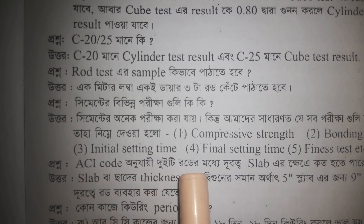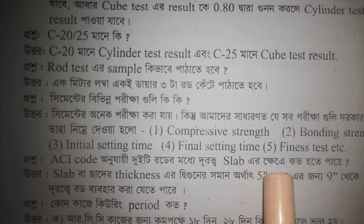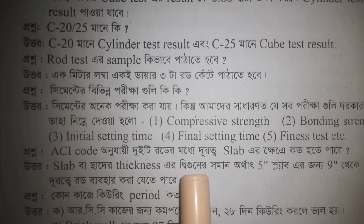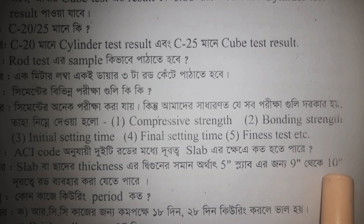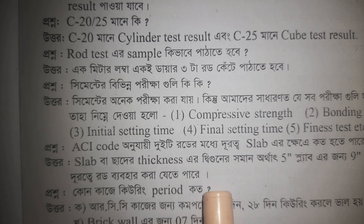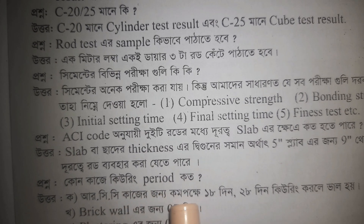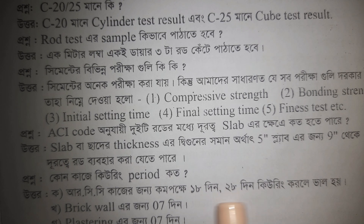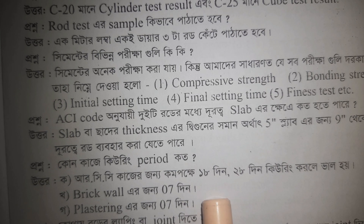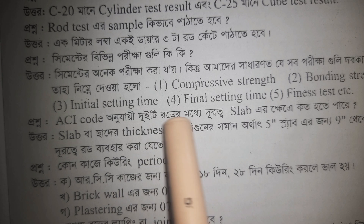Per ACI code, how many rods can be placed in the middle of a slab? Per ACI code, how many rods can be placed in the middle of a slab? The slab — rods are placed evenly through the slab. Per ACI code, rods/bars can be placed in the slab. Thank you so much.